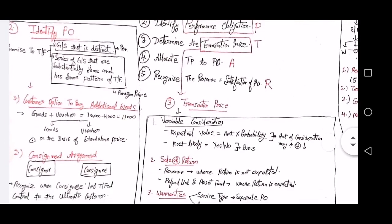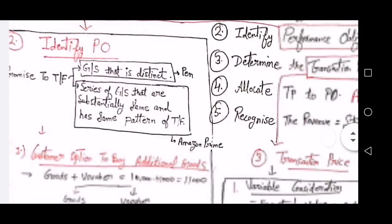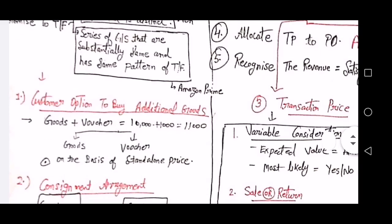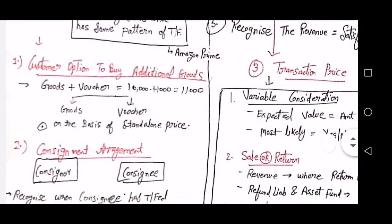Step two is to identify the performance obligation. An obligation is a promise to transfer goods or services — for example, a pen. Or it can be a promise to transfer a series of goods or services that are substantially the same with the same pattern of transfer — for example, an Amazon Prime membership, where you get a series of services like watching web series and movies, all in the same category with the same transfer pattern.